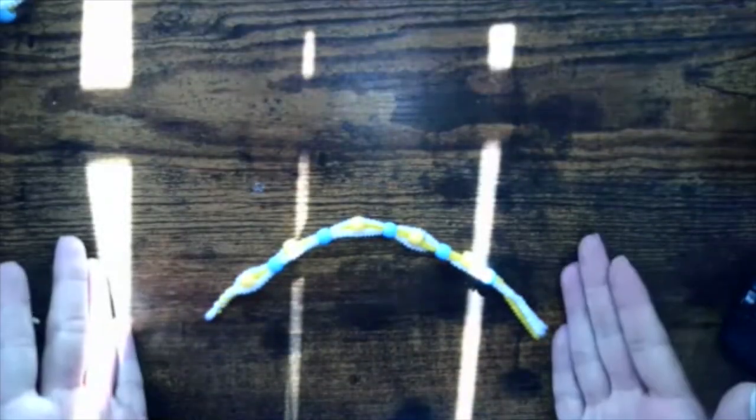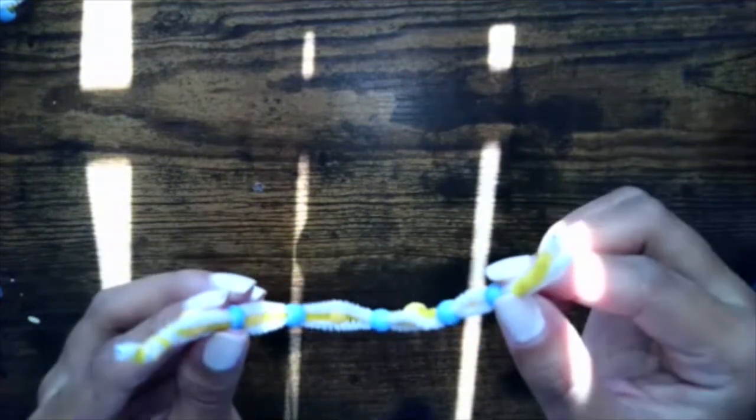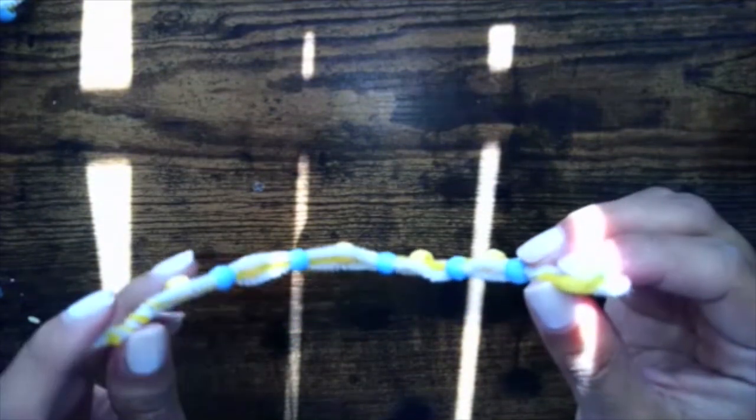Okay, now we have our completely beaded bracelet. We're going to repeat the same step to this end of our bracelet like we did to this one, where we're going to twist the ends all together so we secure our beads on.